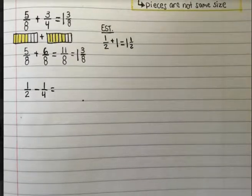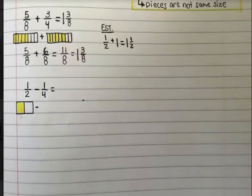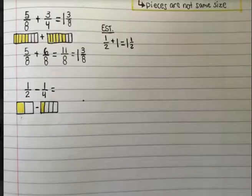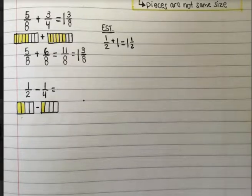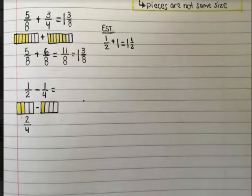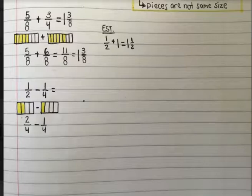Here I have one half minus one fourth. I want to take away one fourth from one half. When I look at these models, here I have a half and I want to take away a fourth. But they're not the same size. So we partition one half. Because the fourths are the smaller pieces, you can easily make the bigger pieces into smaller pieces by partitioning. If I partition each half into two pieces, now I see that two fourths is equivalent to one half. And two fourths minus one fourth — I can take one fourth away from two fourths, because those pieces are the same size.